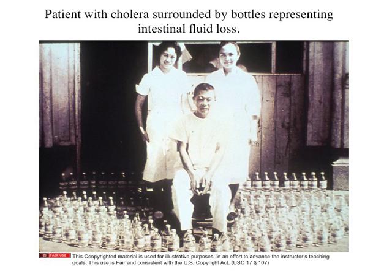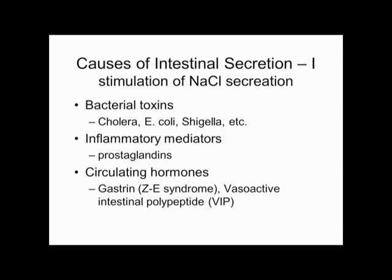A classic photo from the Dhaka cholera research station shows a gentleman who survived cholera surrounded by the many IV fluid bottles required to keep him hydrated. The number one cause of secretory diarrhea worldwide is infection with toxin-producing organisms. Cholera is the classic one, not common in the United States. E. coli and Shigella are the more common ones — E. coli makes toxins behaving similarly to cholera toxin, and Shigella in early phase also makes a secretory toxin.